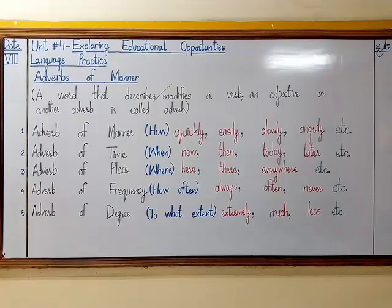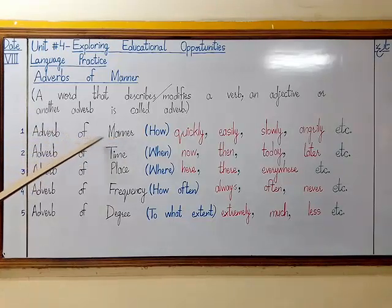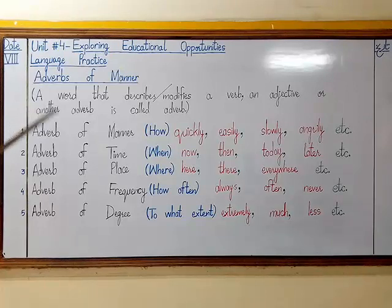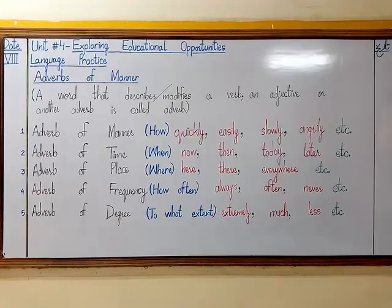I have written 5 types of adverbs on the board, though there are overall 10 different types. We are studying only one type today, and I am telling you 5 types here. The remaining 5 types I will cover in class 9th inshallah. The 5 types are: adverb of manner, adverb of time, adverb of place, adverb of frequency, and adverb of degree.